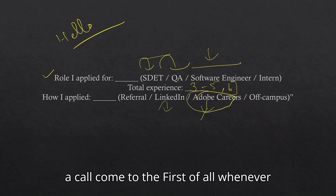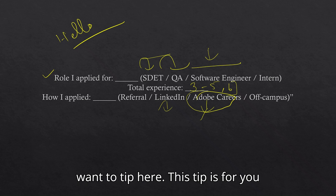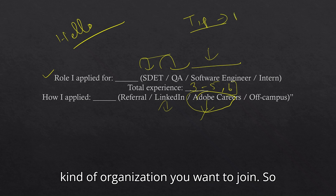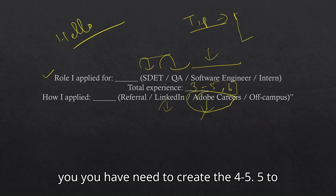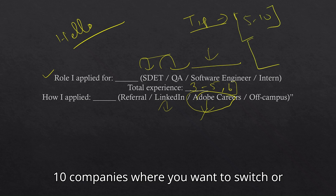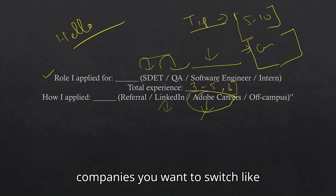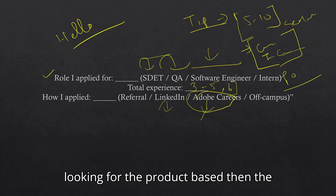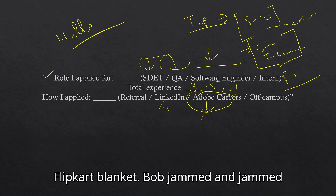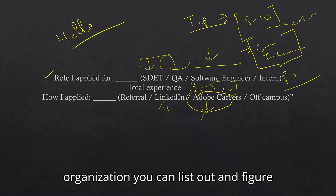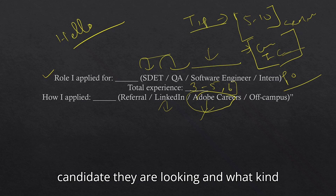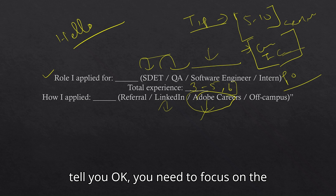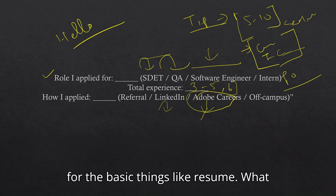From both application channels I got a call. One tip for you guys: if you are targeting companies, you should be aware of what kind of organization you want to join. Create a list of five to ten companies you want to switch to. For service-based you have Cognizant, TCS, and similar. For product-based you have Adobe, Microsoft, Google, Amazon, Flipkart, Blinkit, and many others. Figure out what kind of candidate they are looking for and what kind of resume you need to create — not just focusing on the interview but also on basic things like resume and skills.